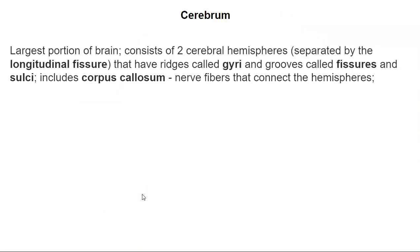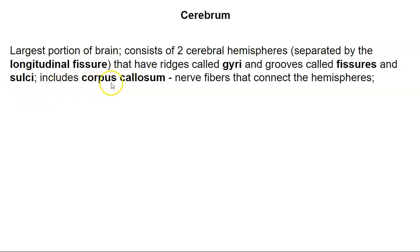The cerebrum has a few parts to it. As mentioned, it's the largest portion of the brain, and it consists of two cerebral hemispheres — the left and the right — separated by something called the longitudinal fissure. The cerebrum has ridges called gyri (a single one is a gyrus) and grooves called fissures and sulci (a single one is a sulcus). The cerebrum also includes the corpus callosum, which has nerve fibers that connect the two hemispheres of the brain together.